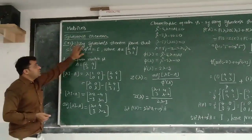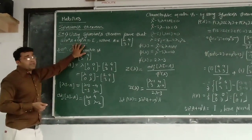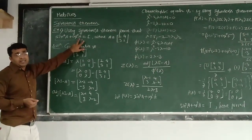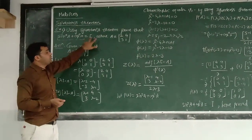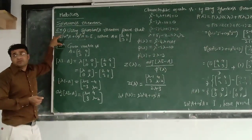So using Sylvester's theorem, prove that the sin square A plus cos square A equals to I. Now, this A stands for the matrix, that's why this would be equal to the I here, identity matrix.